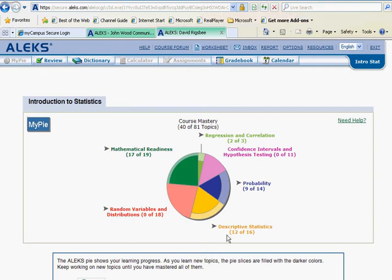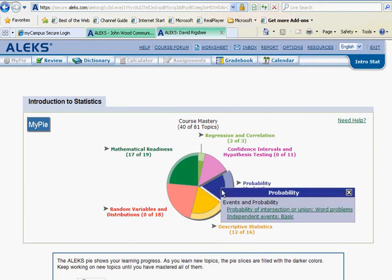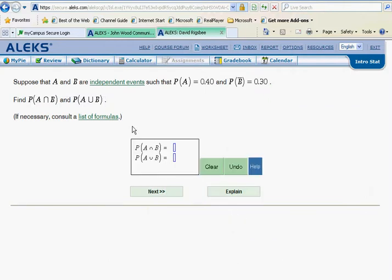In this segment we will be looking at the ALEKS probability slice, focusing on independent events. Suppose A and B are independent events and the probability of A is 0.40, and the probability of not B is 0.30. We need to calculate two things that involve some symbolism, so a little interpretation might be helpful.